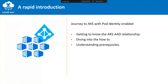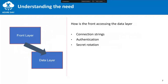To understand Pod Identity, we need to first understand the Kubernetes service relationship with Azure AD, and we will look at the prerequisites to give some context. Usually when we have a legacy application, let's say we have a front layer which needs to talk to a data layer — it involves a connection string, authentication, and the pain of secret rotation.